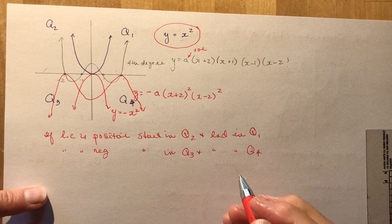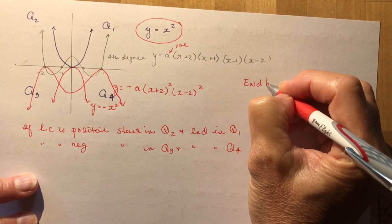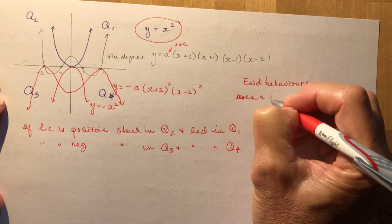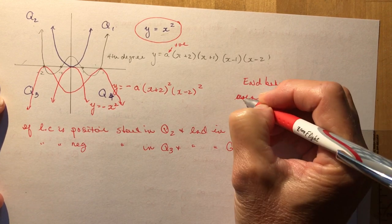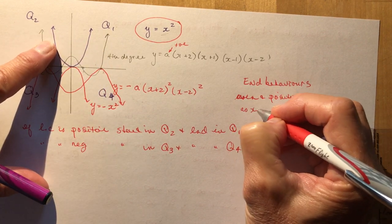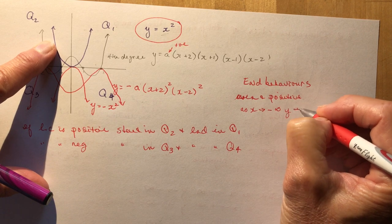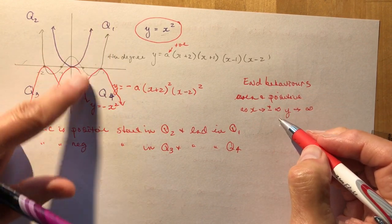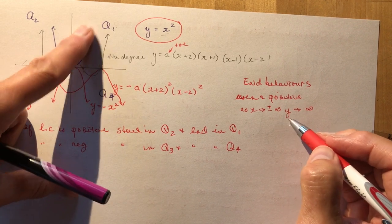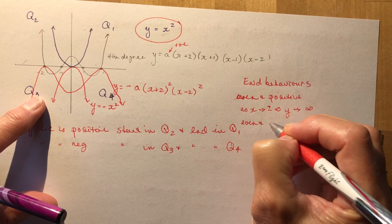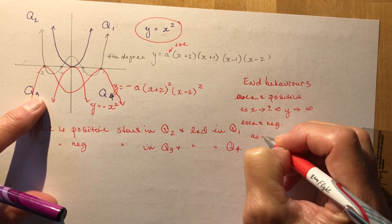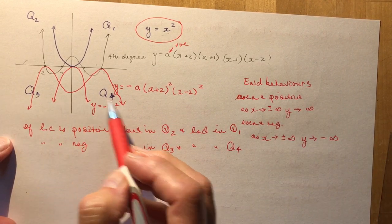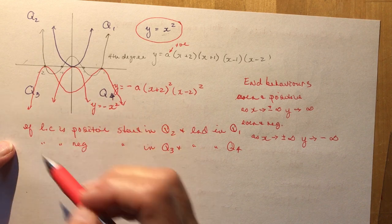For end behaviors of even degree functions: even and positive — as X approaches negative infinity, Y approaches positive infinity, and as X approaches positive infinity, Y approaches positive infinity. We can write this as X → ±∞, Y → +∞. For even and negative leading coefficient: as X approaches plus or minus infinity, Y approaches negative infinity — so all of these go downward.